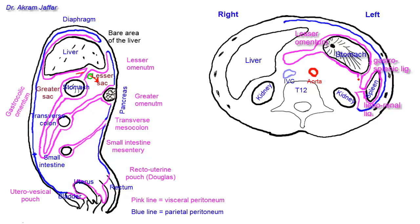The visceral peritoneum on the posterior surface of the stomach reaches the greater curvature and is reflected from there to the hilum of the spleen, creating the second layer of the gastrosplenic ligament. From the hilum of the spleen it is reflected back onto the kidney, creating the second layer of the lienorenal ligament. The kidney has no mesentery — it is a retroperitoneal structure, in fact a primary retroperitoneal structure.